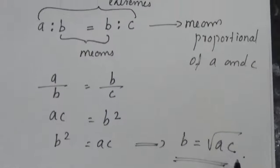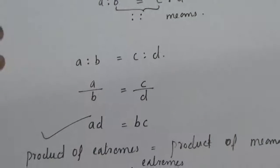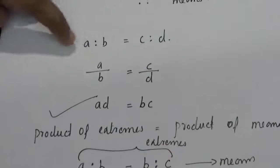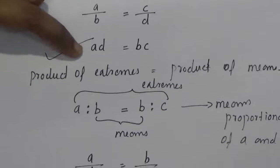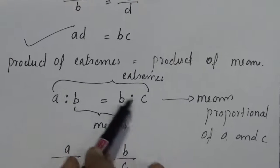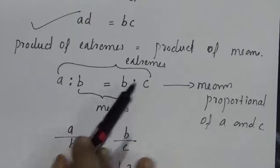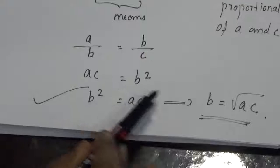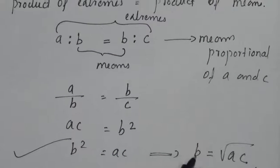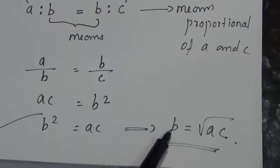Remember these two rules. In the case of proportion, if A is to B equals C is to D, then the product of extremes equals the product of means — that is, AD equals BC. And if B is the mean proportional of A and C, meaning A is to B equals B is to C, then A by B equals B by C, giving B equals the square root of AC. A and C are the extremes, B is the mean.